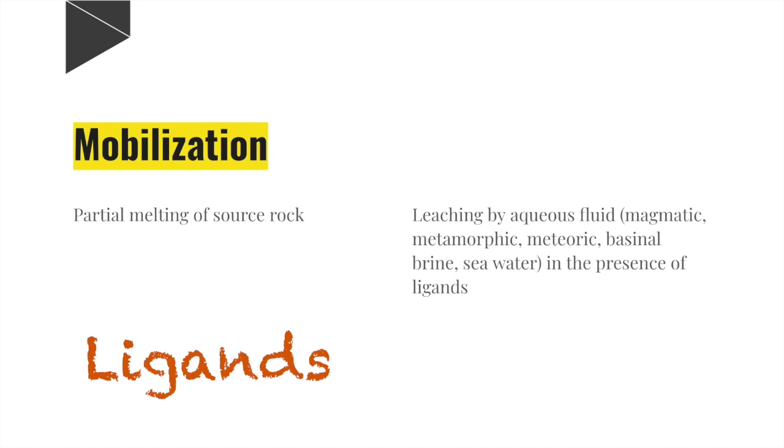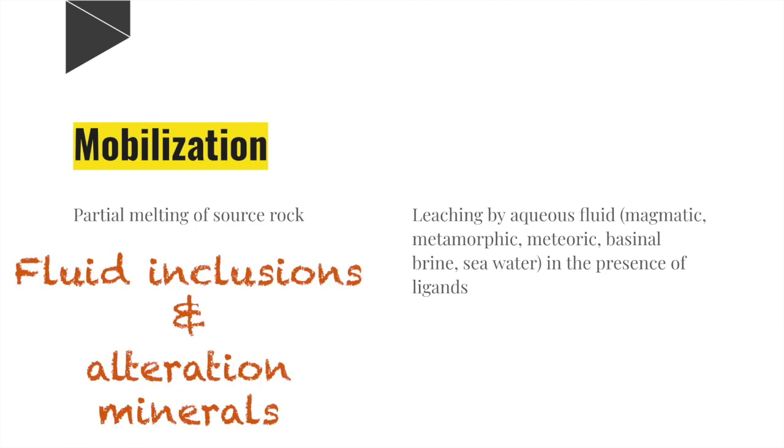So how do you know which complexing species or ligands were available for transporting metals? That is very crucial to understand. There are two known ways of determining that. The first one is to study the fluid inclusions which are regarded as the true samples of ore fluids. Fluid inclusions are fluids trapped within minerals during crystallization. The second one is the evidence from alteration minerals in the wall rock around the mineralized zone.